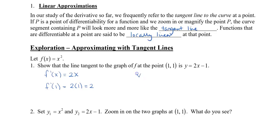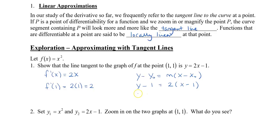So I'm going to write the tangent line. Remember, it's y minus y-naught equals m times x minus x-naught. I'm going to plug in the point 1 — my slope is 2 and my x-naught is also 1. So when I simplify, I get y = 2x − 1, which is what I wanted to show.